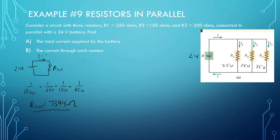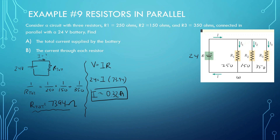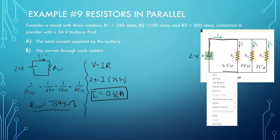Now that we have R total, we can use V total equals current total times R total. V is 24, R total is 73.94. So current total equals 24 divided by 73.94, which gives 0.32 amps. There are 0.32 amps through the main wire, and then it splits — some goes through each branch.